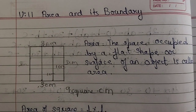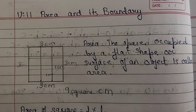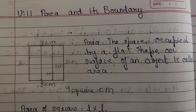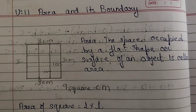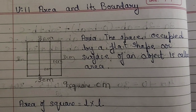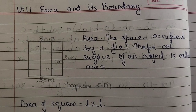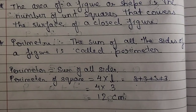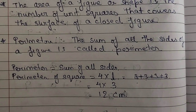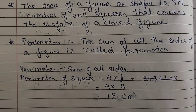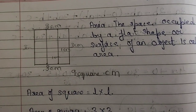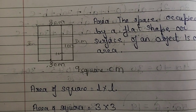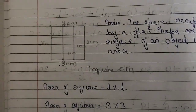Hello students, welcome to our maths class. Unit 11: Area and its Boundary. Area means the place occupied by a flat shape or surface of an object. The boundary means its perimeter — the sum of all the sides of a figure is called the perimeter. In my previous video we learned about the area and perimeter of a square.